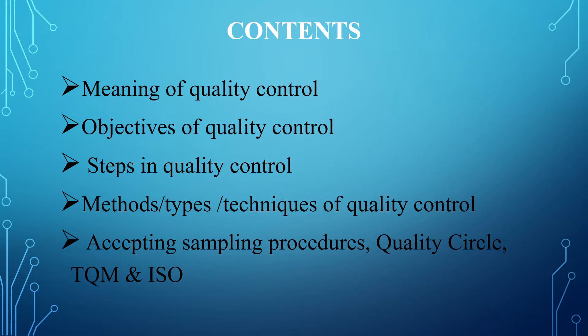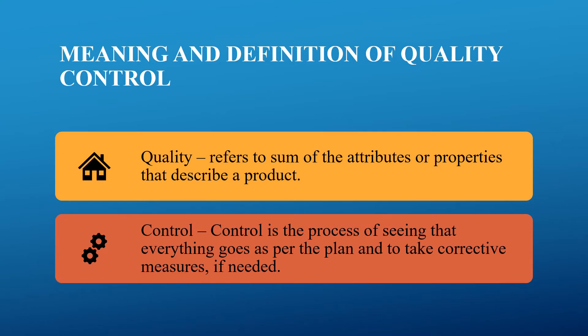Let us see what is the meaning of quality control. For a better understanding, I have divided the two words so we can understand each individually. Quality refers to the sum of attributes, characteristics, features or properties that describe a particular product. Control is a process where you monitor throughout the production process to see that everything is going as per the plan, and if you find any deviations, you take corrective measures.